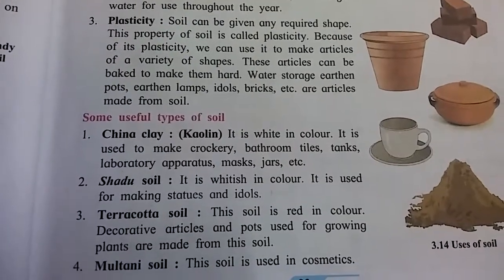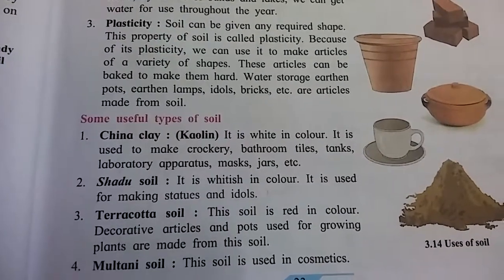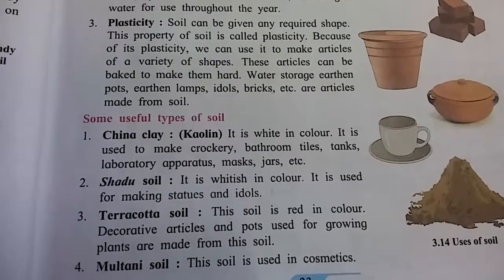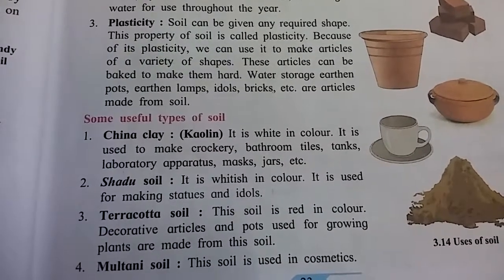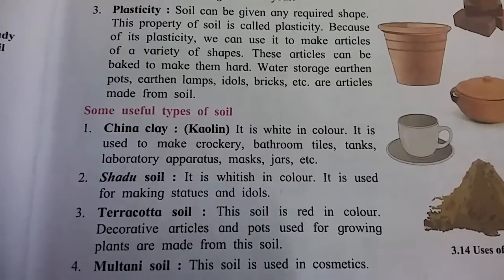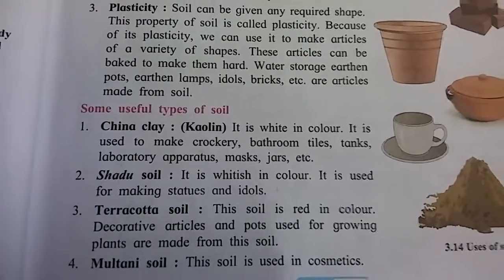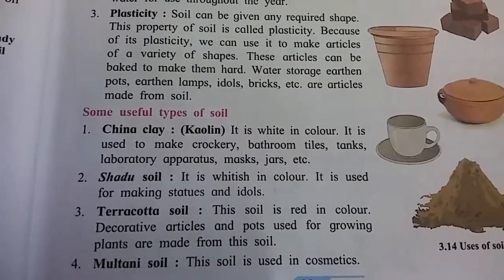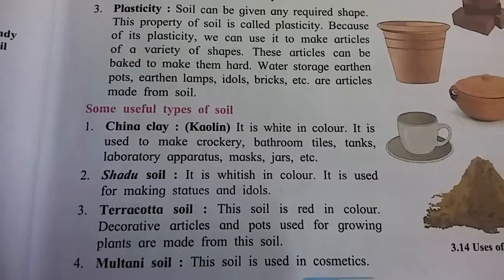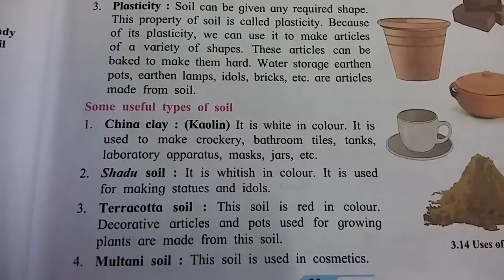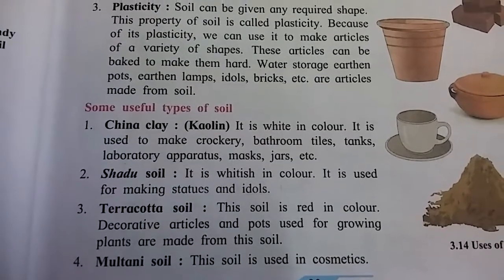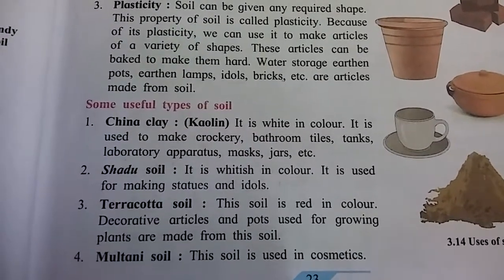The best example of shadow soil is a statue of Ganesh Murthy. From shadow soil we make different statues of gods. Third is terracotta soil — this soil is red in color.